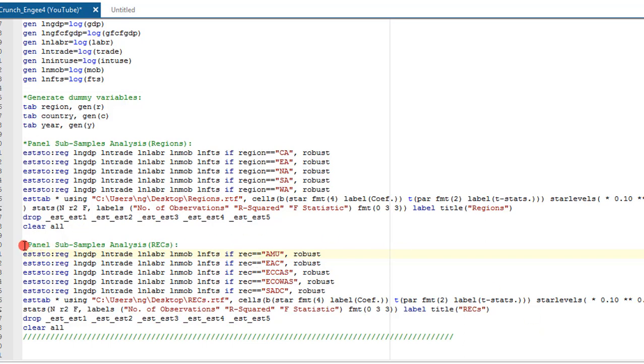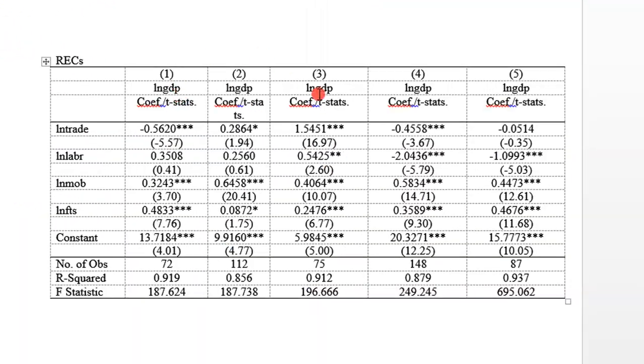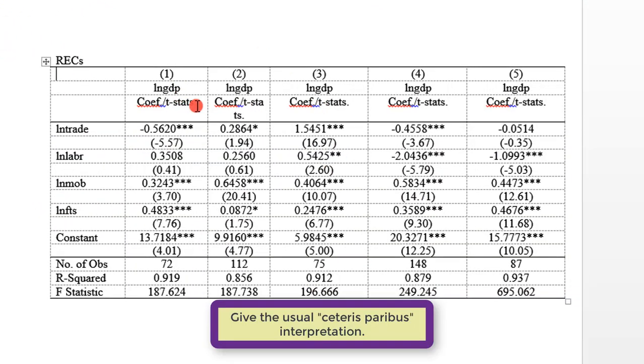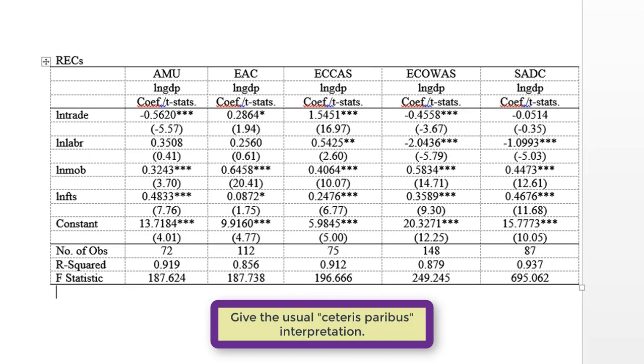So now let me highlight all these and execute and see how the results will be. I have the output here on the screen, number one to five. These are the respective regional economic communities. Let me quickly change those: number one is AMU, number two is EAC, number three is ECCAS, number four is ECOWAS, and number five is SADC. You can easily see it is easy to make comparative analysis along regional economic communities arguments.